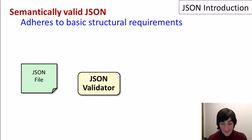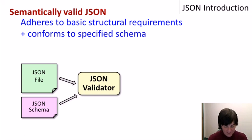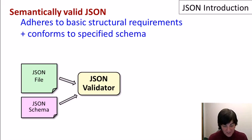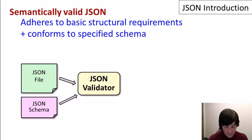If the file is syntactically correct, it can be parsed into objects in a programming language. Now, if we're interested in semantically valid JSON — that is, JSON that conforms to some constraints or a schema — then in addition to checking the basic structural requirements, we check whether JSON conforms to the specified schema. If we use a language like JSON schema, for example, we put a specification in as a separate file. And in fact, JSON schema is expressed in JSON itself, as we'll see in our demo.